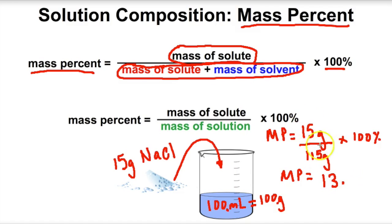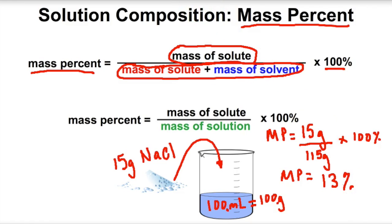Using the correct number of significant figures — two sig figs from 15, three from 115 — the mass percent comes out to 13%. So we have a 13% by mass salt water solution.